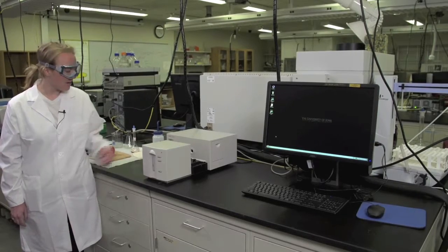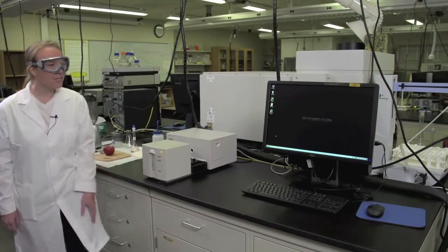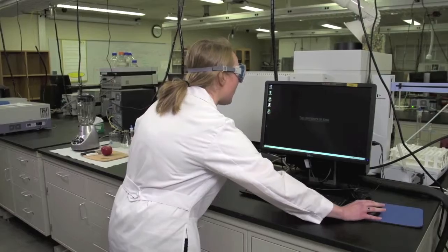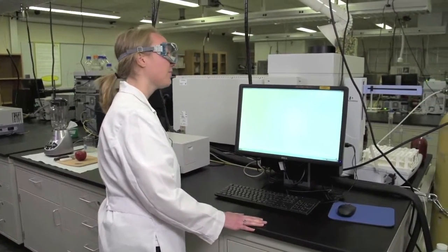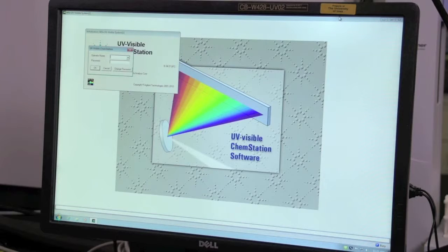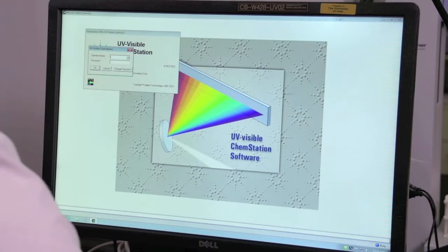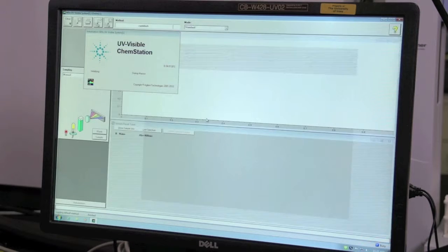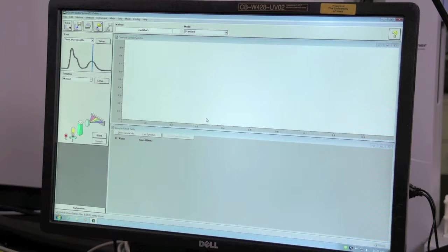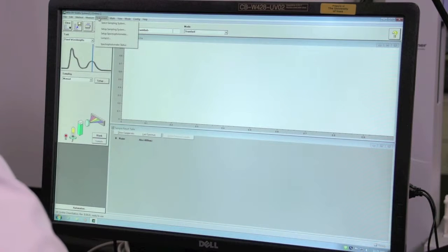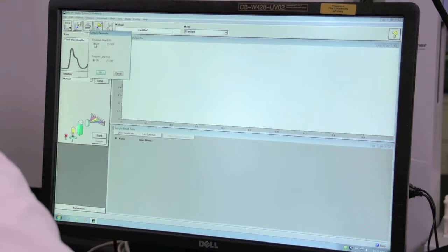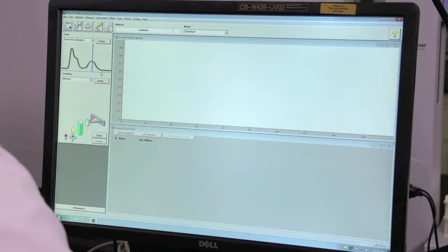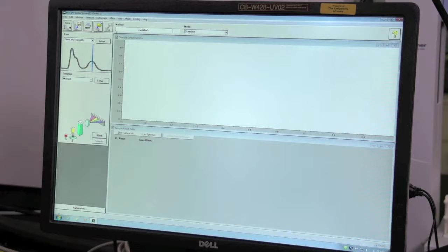When you get to lab, first turn on the UV visible spectrometer, then go to the computer and turn on the instrument online software. When the dialog box prompting the operator name and password appears, click cancel and wait for the software to load. Once loaded, go to Instrument, click on Lamps, and make sure both the deuterium lamp and tungsten lamp are turned on. You'll want to wait at least eight minutes to let the lamps warm up.